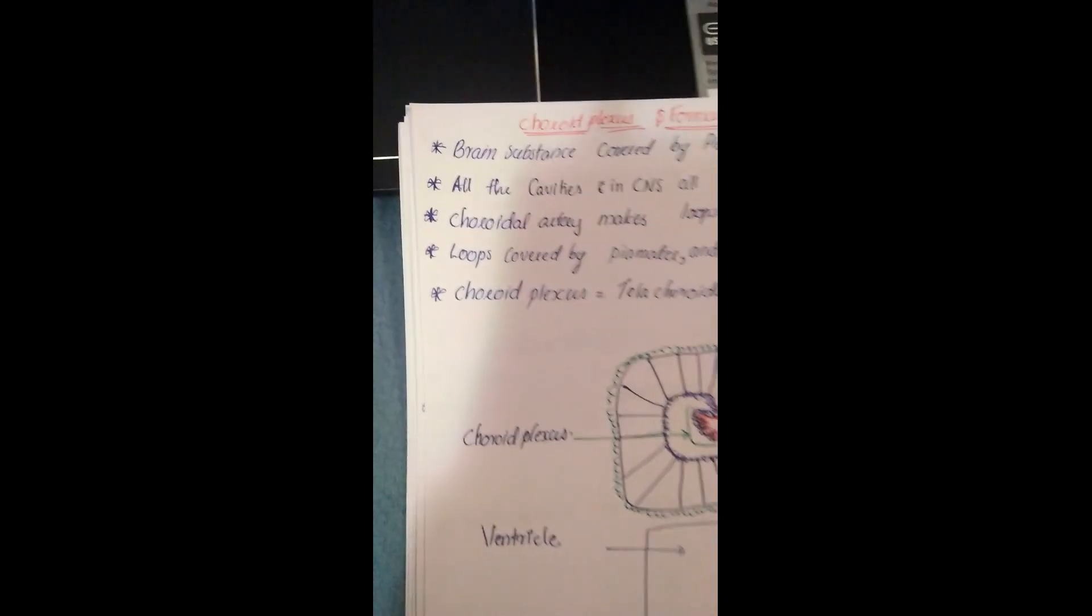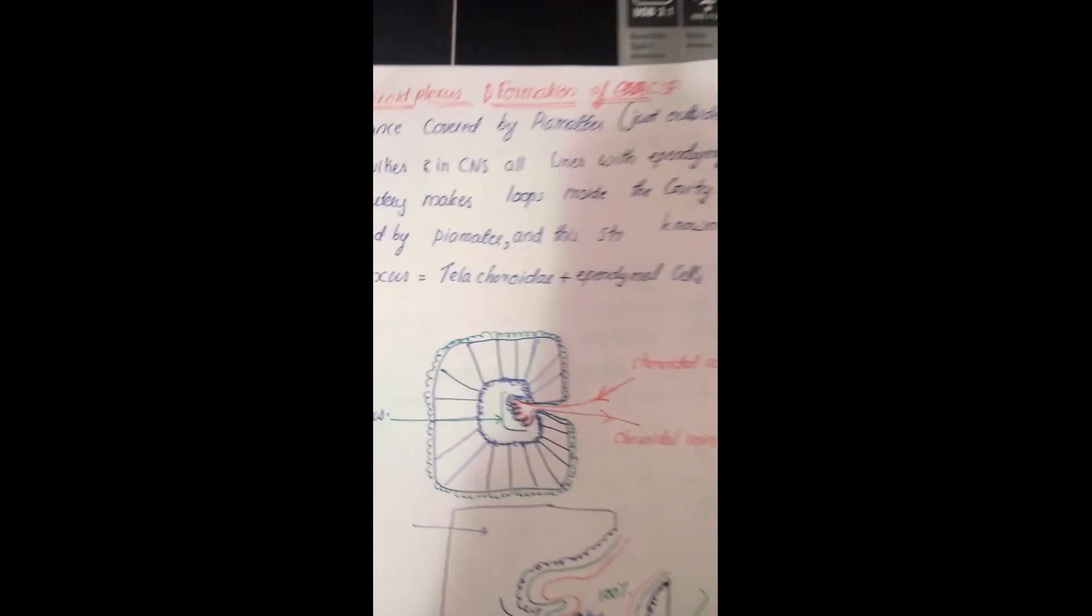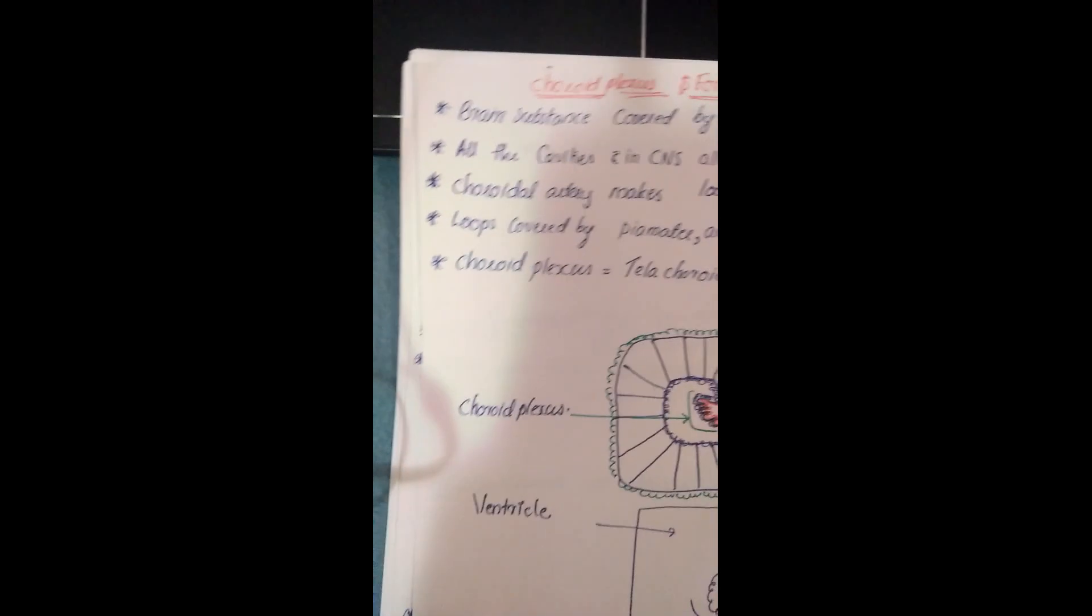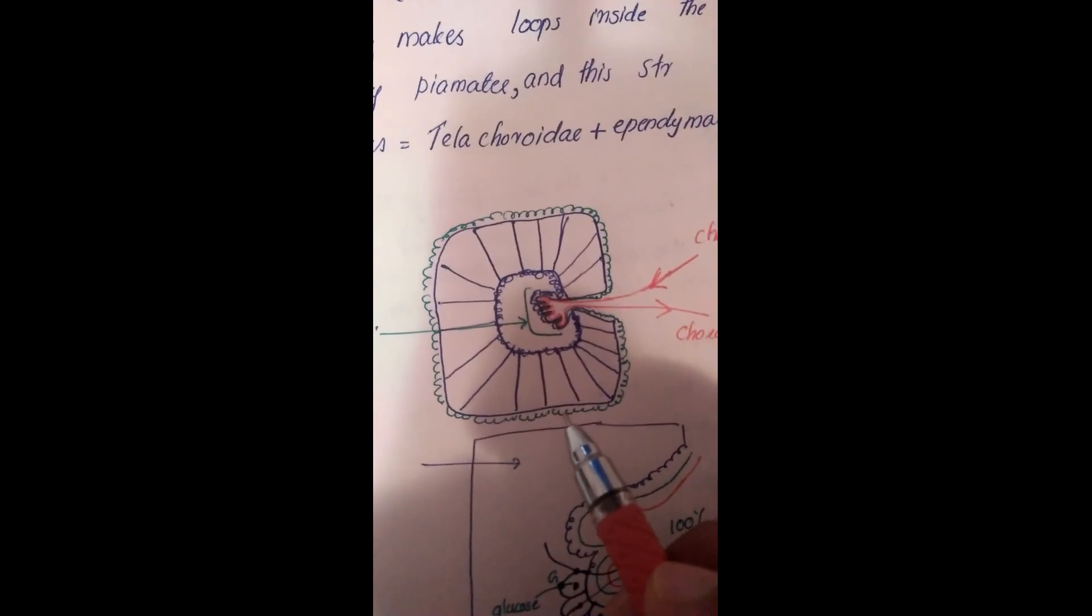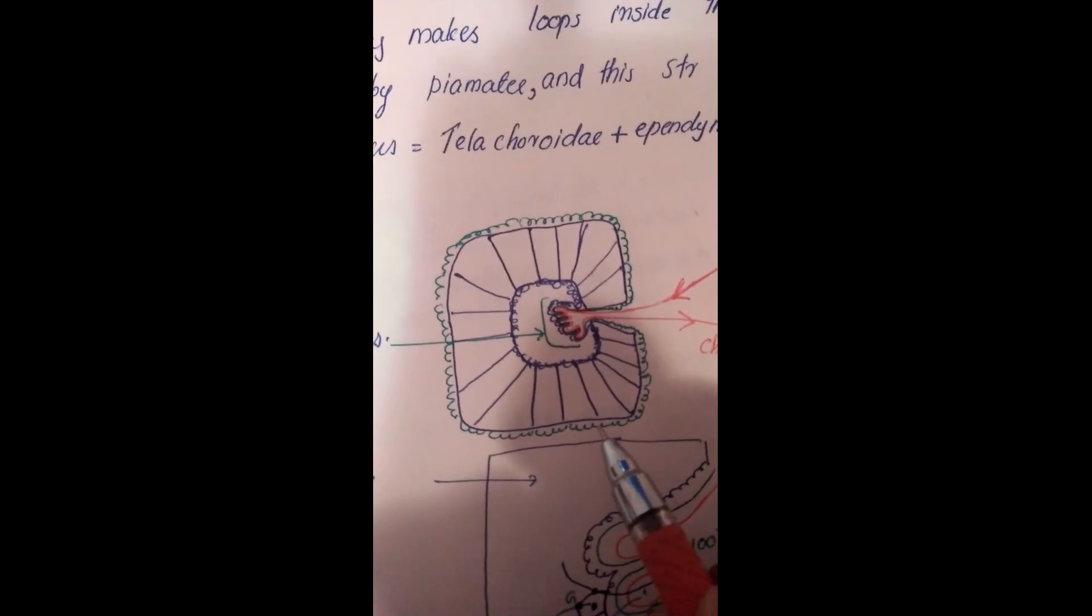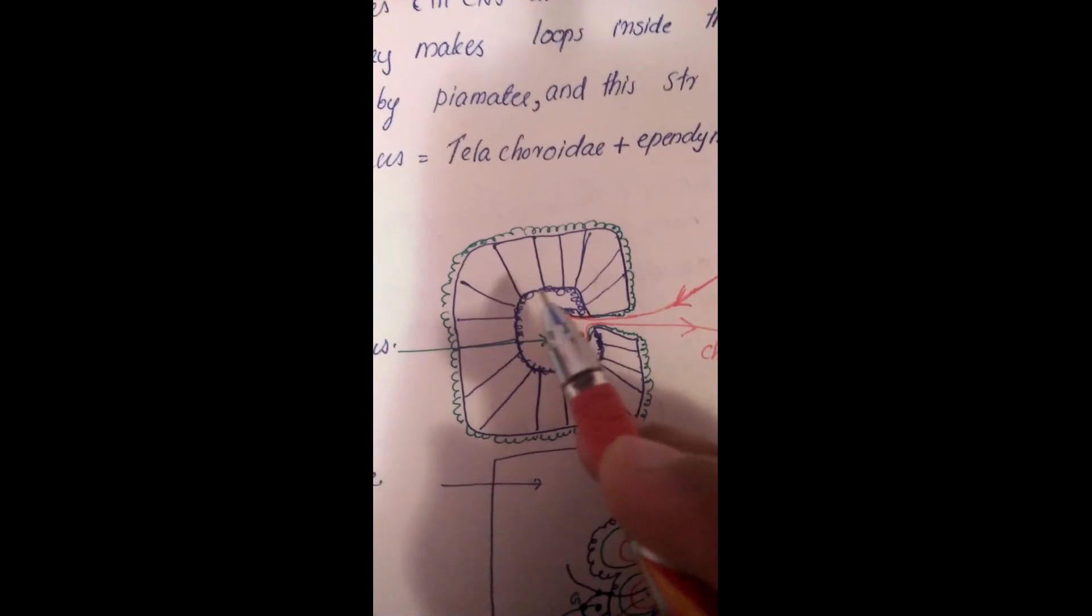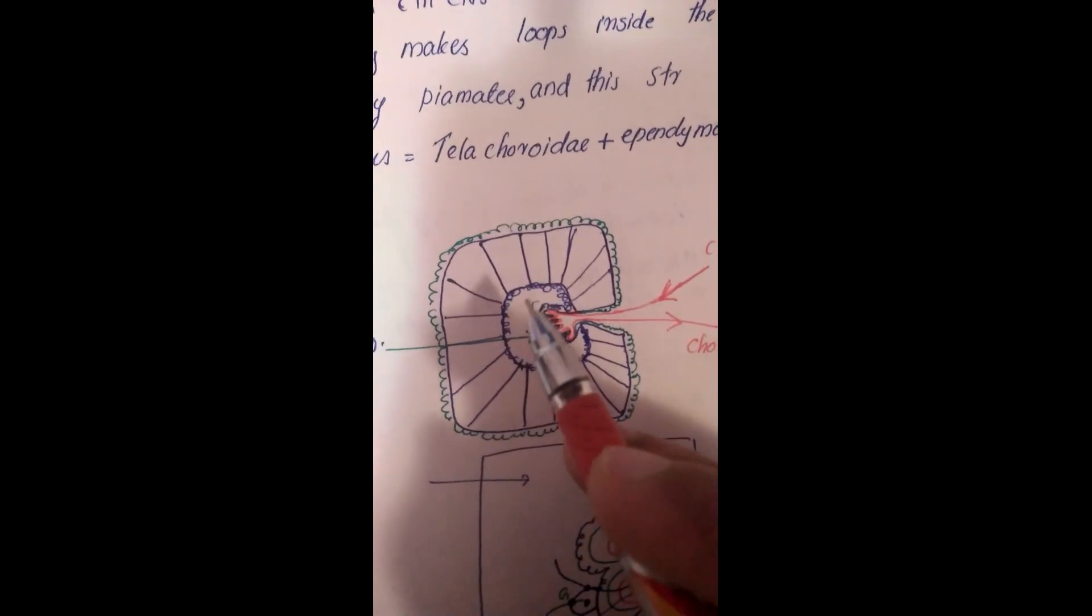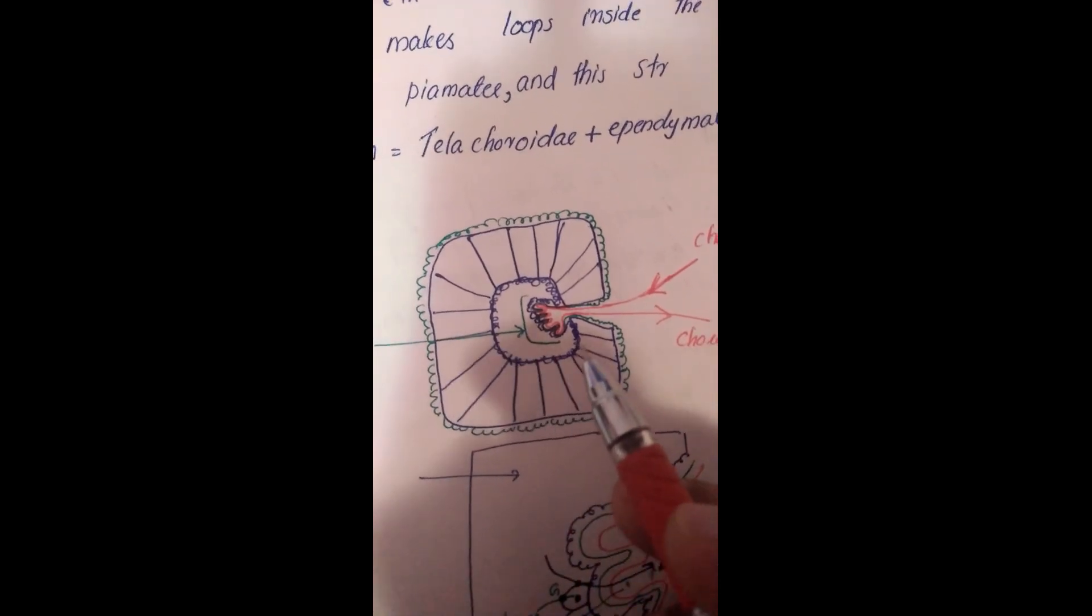Here we can see our brain. The brain is covered by a first layer - what is this first layer? It's the pia mater. What we can see here is our cavity which is also known as the ventricle. The ventricle is lined by ependymal cells.